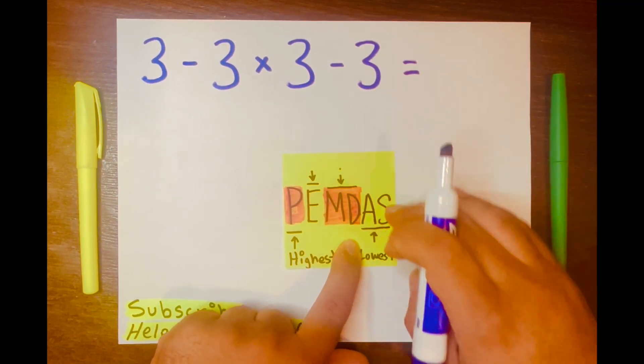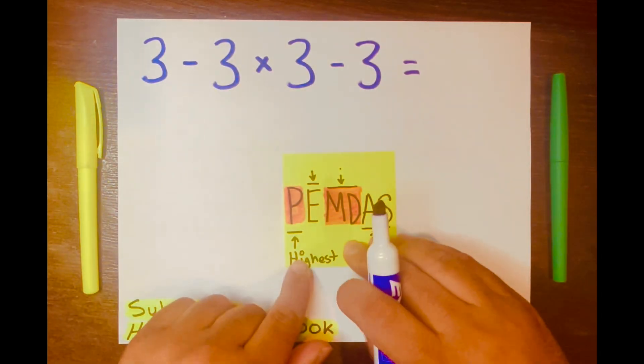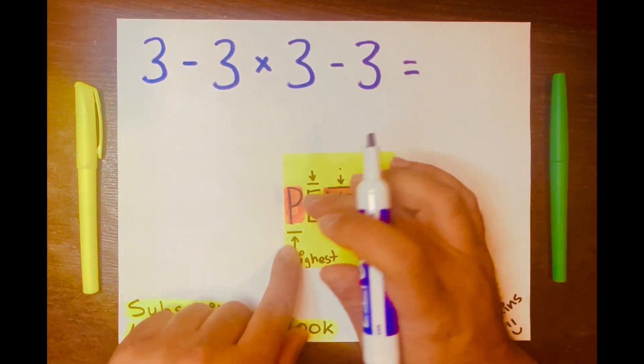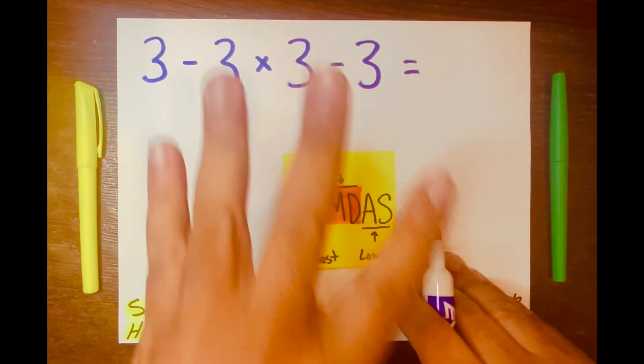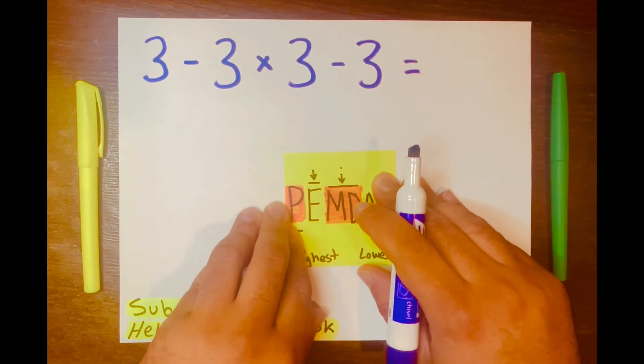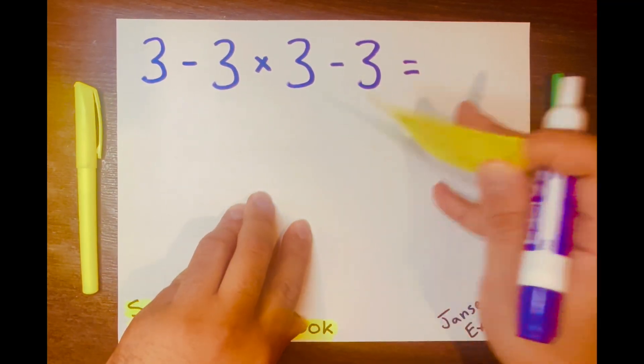Again, AS is within its own level, MD is within its own level, E own level, P own level. Four different levels. All right, so let's go ahead and tackle this math problem.